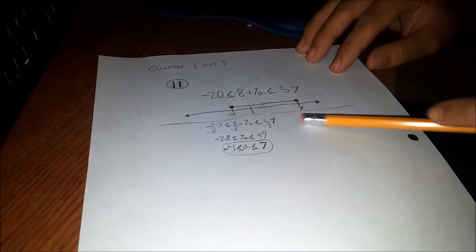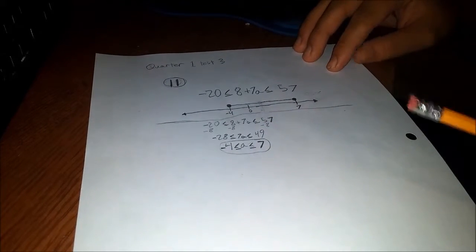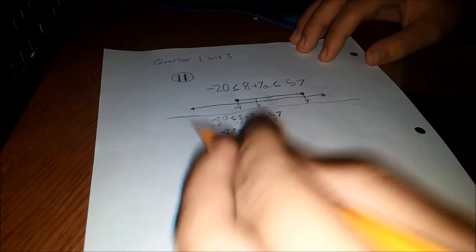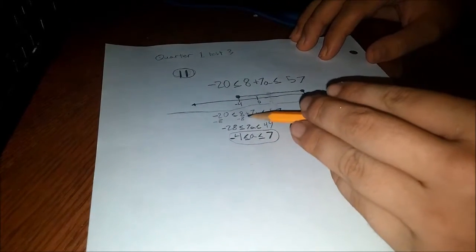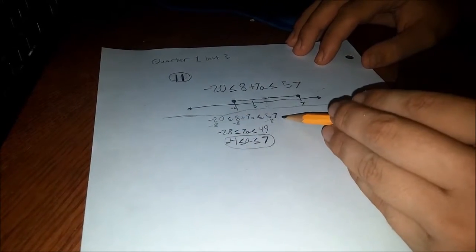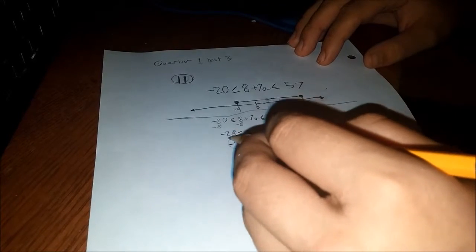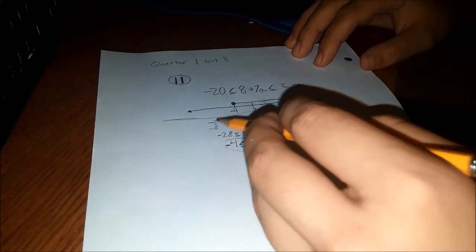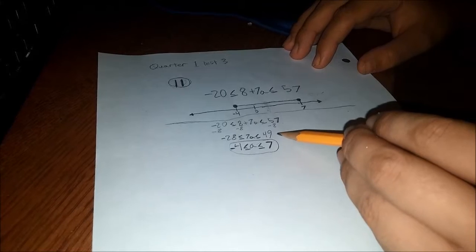I rewrote the question down here for convenience reasons. The first step is to subtract the A from -20 and 57, which gives us the values of -28 from -20 and 49 from 57.